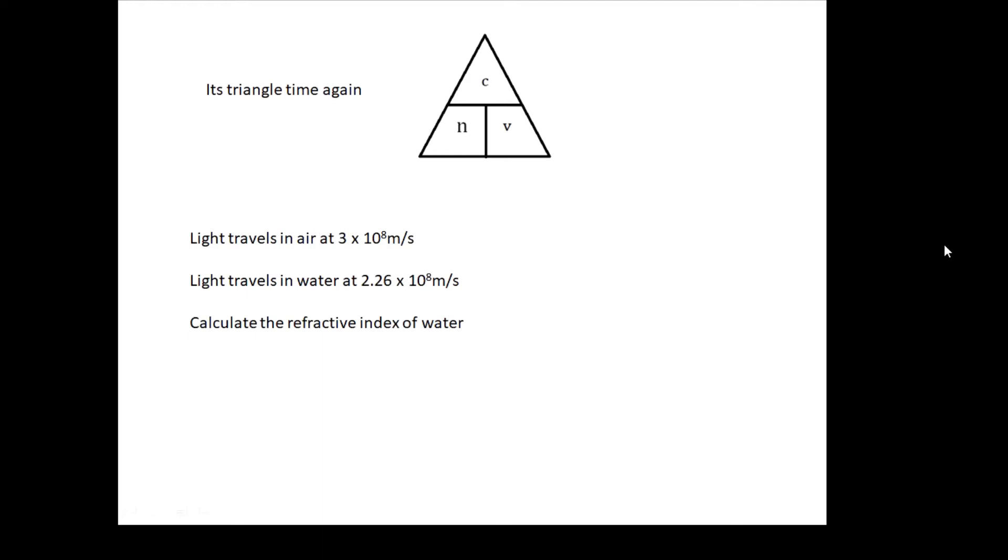Let's do this example together. Light travels in air at 3 × 10^8 meters per second. Light travels in water at 2.26 × 10^8 meters per second. What's the refractive index of water? So n equals c over v, so it's going to be 3 × 10^8 divided by 2.26 × 10^8.